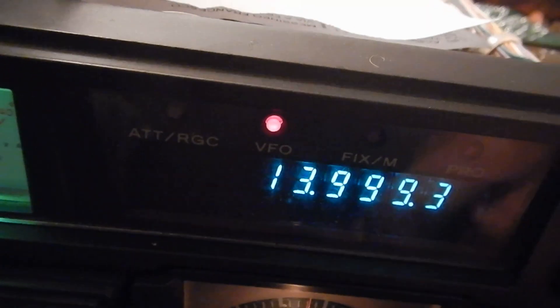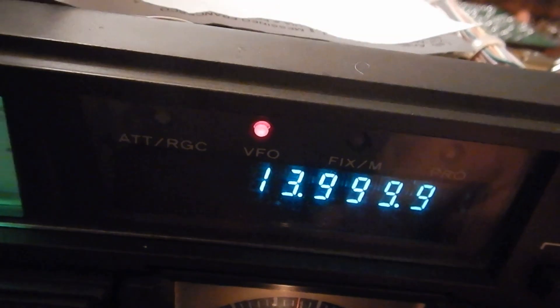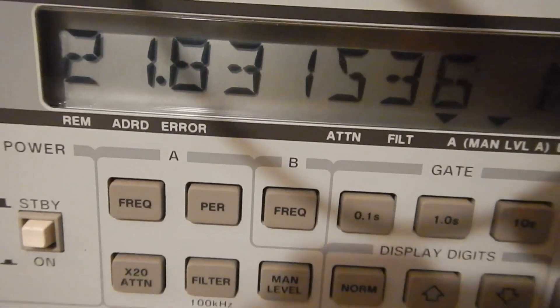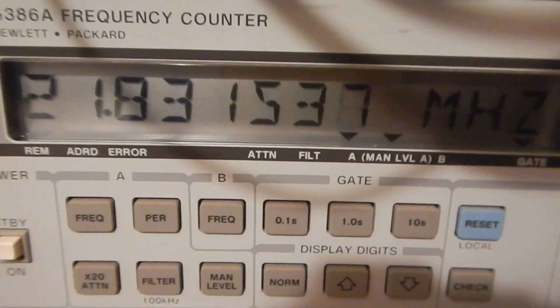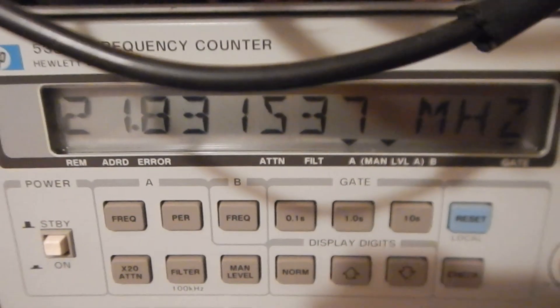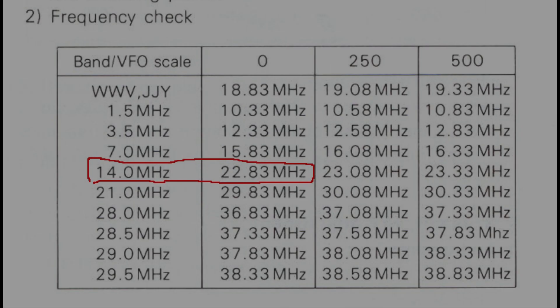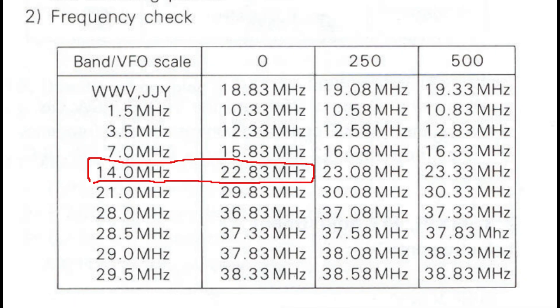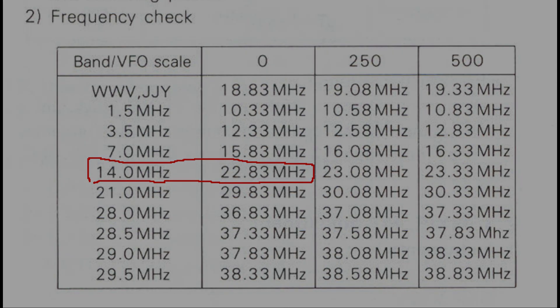The 14 MHz band coil could be adjusted to obtain the correct voltage. However, on 14.0 MHz the oscillator frequency is 21.83 MHz but according to the manual it should be 22.83 MHz, not 21.